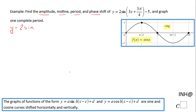First, I notice that this function is not in standard form — the standard form has x minus c inside the parentheses. So we want to factor out the three from inside the parentheses, giving us x plus π/4 inside. You can verify this using the distributive property to get 3x plus 3π/4, and then minus five.